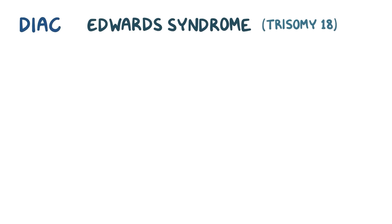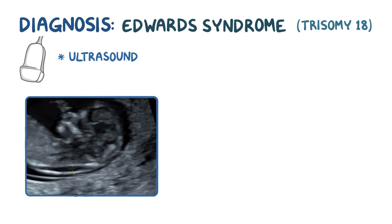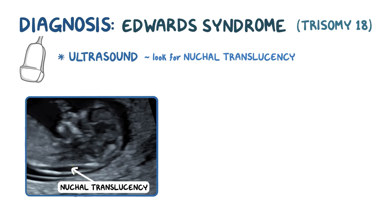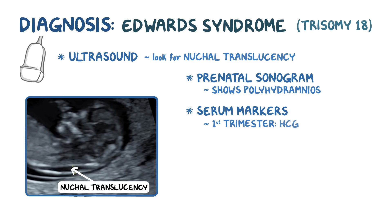There are some clues to diagnose Edwards syndrome prenatally. An imaging test using ultrasound can be performed, where clinicians look for nuchal translucency. Suspicion for Edwards syndrome should also be raised if prenatal sonogram shows polyhydramnios. Certain serum markers also suggest that a baby might have Edwards syndrome. During the first trimester, human chorionic gonadotropin, or HCG, as well as pregnancy-associated plasma protein A, or PAPP-A, are decreased compared to unaffected pregnancies.